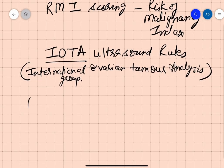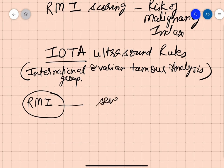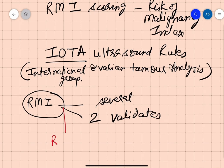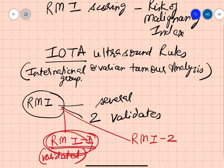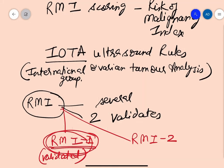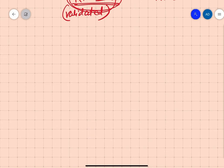Let's first have a brief about RMI. There are several RMI scores, but only two have been validated: RMI1 and RMI2. RMI1 is the most widely used and most validated one, and it is found to be more effective than RMI2. So let's discuss RMI1.